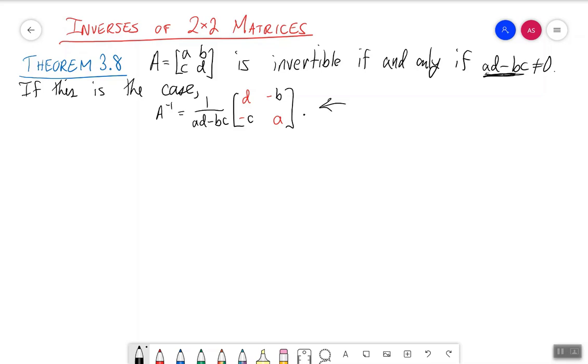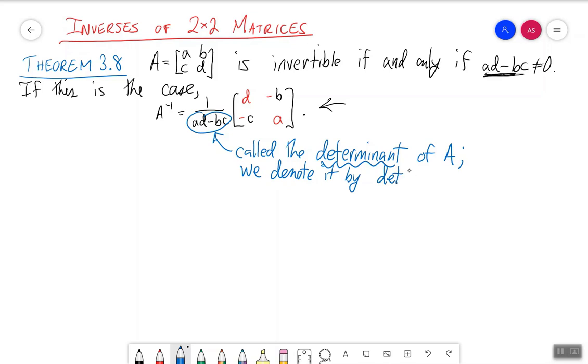Because this quantity A, D minus B, C is so important, we actually give it a special name. We call this quantity right here the determinant. So this is called the determinant, a little squiggly line under there, of the matrix A. And we write it, we denote it by a special symbol, det A.